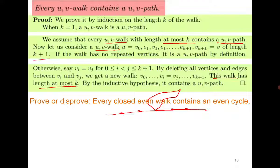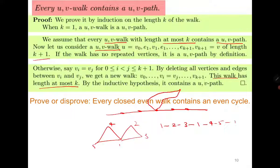Every closed even walk contains an even cycle — true or false? Here, 'even walk' means the walk has even length, and 'even cycle' means the cycle has even length. A counterexample: consider two triangles sharing a vertex, vertices 1, 2, 3, 4, 5. Go from 1 to 2 to 3 to 1 to 4 to 5 to 1 — length is 6 (even), but this contains no even cycle, so the statement is false.